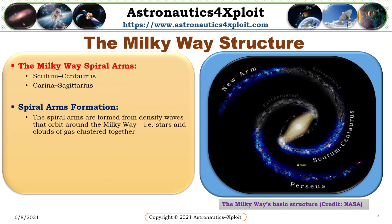The Milky Way structure. The Milky Way spiral arms include Scutum-Centaurus and Carina-Sagittarius. The spiral arms are formed from density waves that orbit around the Milky Way, where stars and clouds of gas cluster together. The picture shows the Milky Way's basic structure.